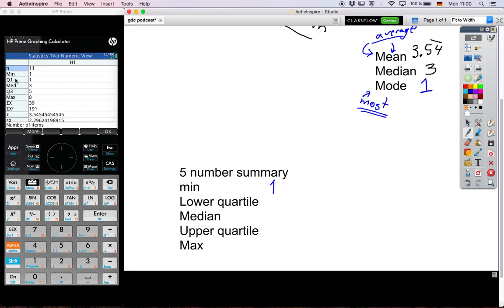So Minimum is one. Lower quartile is? That's one as well. So on the calculator, it's recorded as Q1, as in the first quartile. Median we found before. And our upper quartile, again, is Q3. And maximum. Perfect.